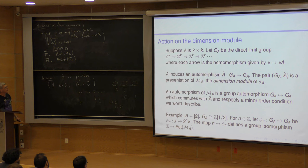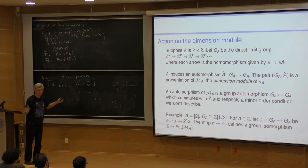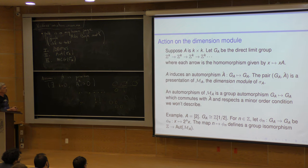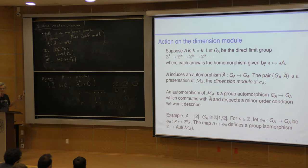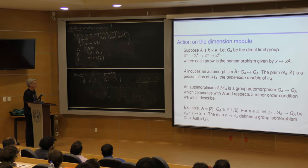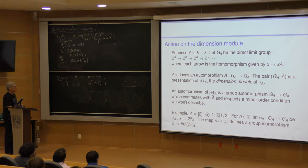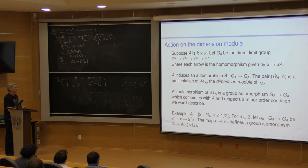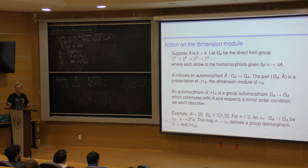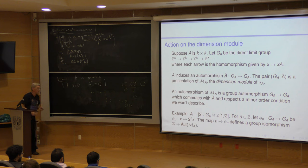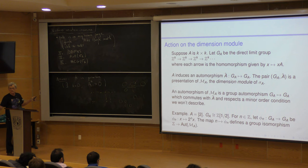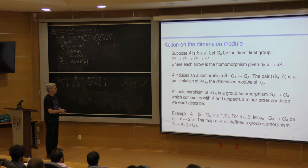What about the dimension module? Given a k-by-k matrix, we can take the direct limit group where the bonding maps are all multiplication by A — I like to take multiplication on row vectors. A itself induces an automorphism of this direct limit group, and this pair — the group together with the induced automorphism — is a presentation of the dimension module of the shift. For example, if we have the matrix 2, the direct limit group is isomorphic as a group to the dyadic rationals. An automorphism of the dyadic rationals is multiplication by a power of 2 or by ±1. There is an order condition requiring that the multiplication by −1 is not allowed, so what is left is just multiplication by a power of 2, and the automorphism group of the dimension module is isomorphic to Z.